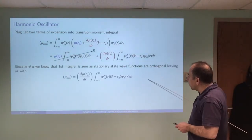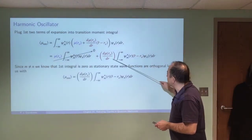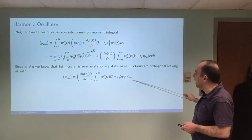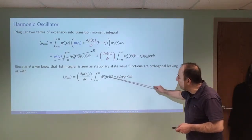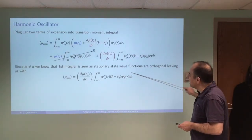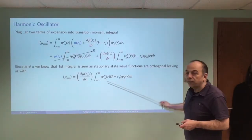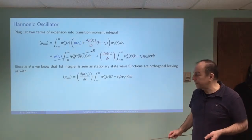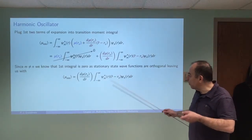So our transition dipole moment really only depends upon the rate of change of the electric dipole moment as the molecule vibrates, and not the permanent dipole moment of that molecule. This is for vibration. So we're going to take this term and now evaluate this integral for the harmonic oscillator.